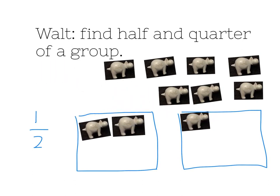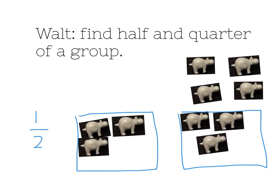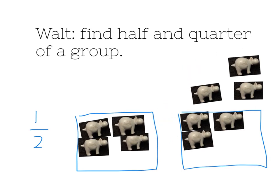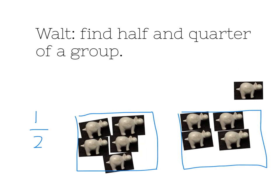One into one group, one into another group, one into another group, until they are all in a group. There are my ten hippos, and I've separated them into two groups. Now my next job is to just make sure that they are all even.